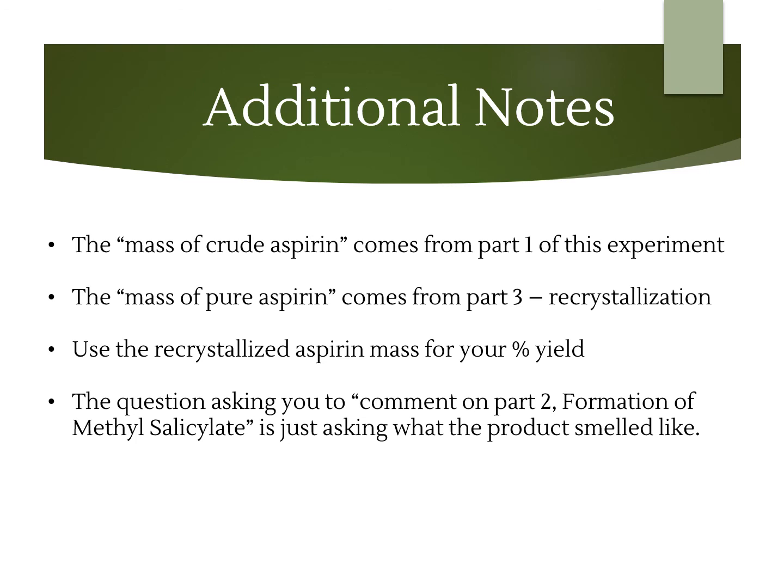Some reminders about the report sheet: when it says mass of crude aspirin, that's from part one — the very first synthesis. The mass of pure aspirin comes from part three, which is the recrystallization part. Both masses provided include the watch glass, so you'll need to subtract the watch glass mass from those values. When calculating percent yield, use your recrystallized aspirin mass since we're further purifying it. There's also a question asking you to comment on the formation of methyl salicylate — that's just asking what it smelled like, which we'll tell you in the video.